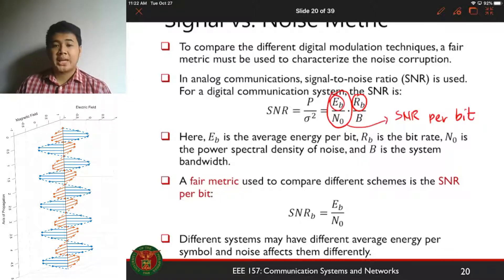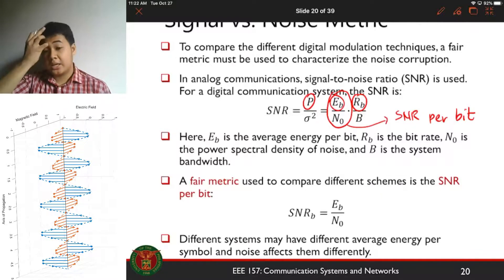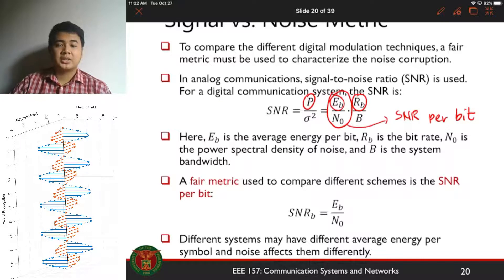So for any digital communication system, the energy per bit is a fair metric to compare the different, the level of noise corruption for any digital communication system. This is a fair metric because the transmitted power varies depending on the number of symbols, the number of bits per symbol. So if we go down to the bit level, we'll be able to compare fairly the different digital modulation techniques. So we will use this as the SNR for your digital communication system instead of just your power divided by the noise power.